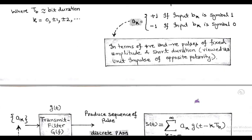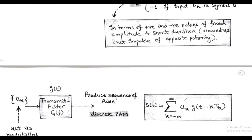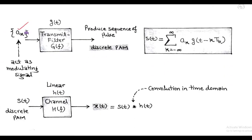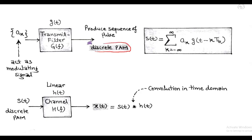And these pulses correspond to a unit impulse of opposite polarity. This encoded signal a_k acts as a modulating signal and is applied to the transmit filter of transfer function G(f), that is in the frequency domain. The transmit filter G(f) produces a discrete pulse amplitude modulated signal.